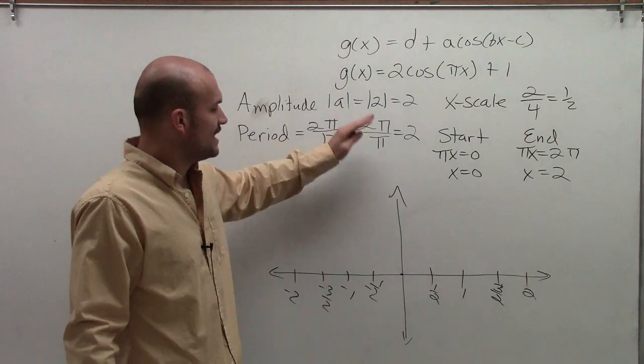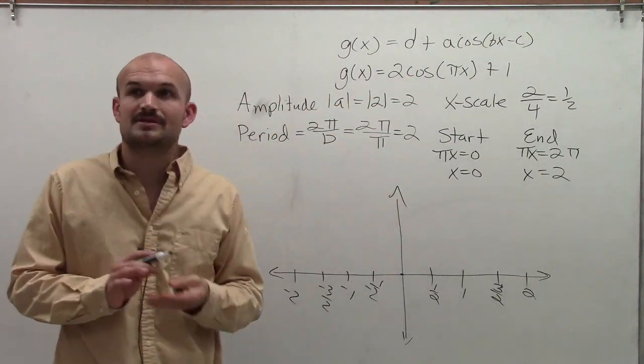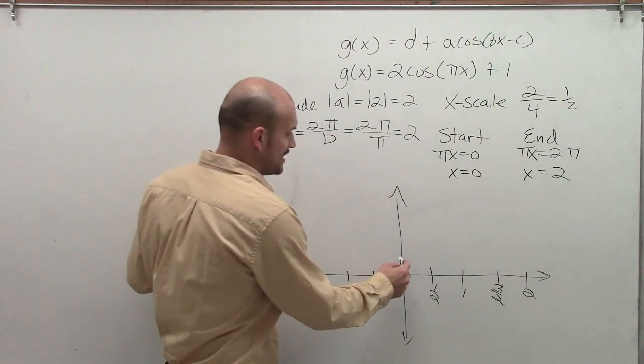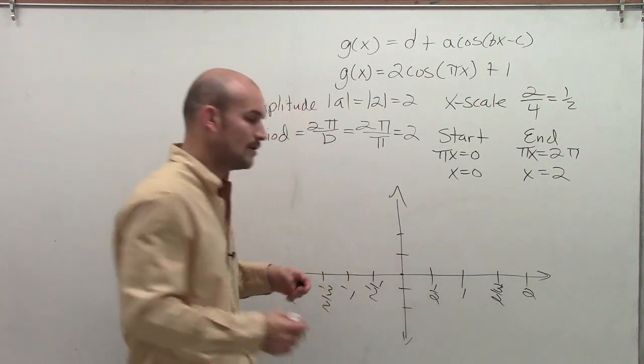So now, the next thing we need to look at is our amplitude. Remember, our amplitude is going to be that max distance. So that means I'm going to have to go up 2 and down 2.